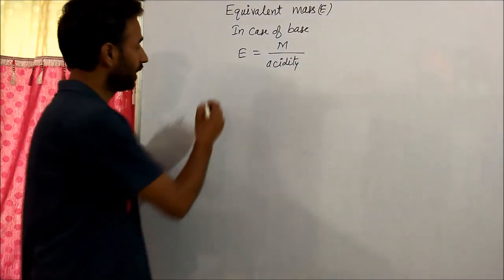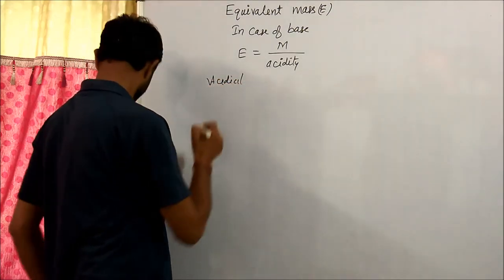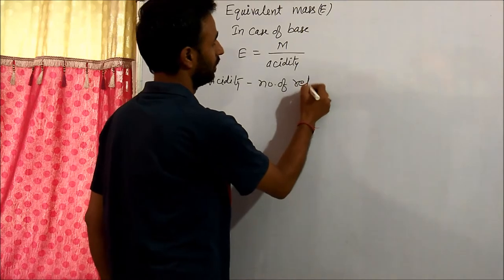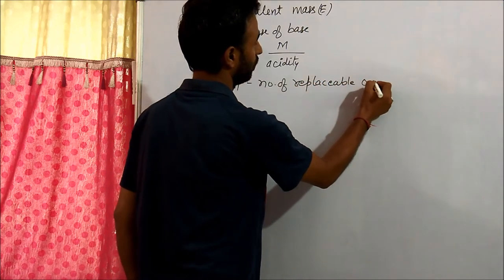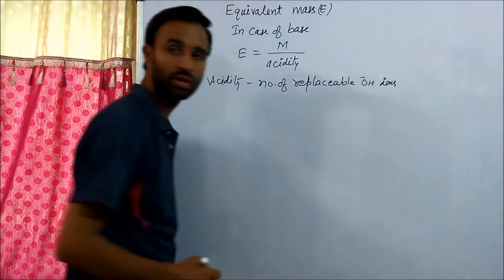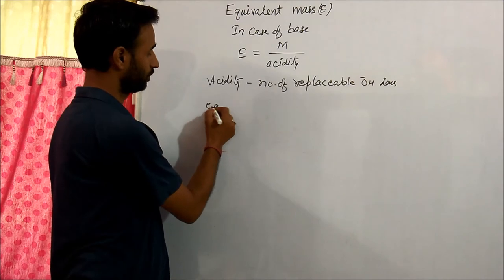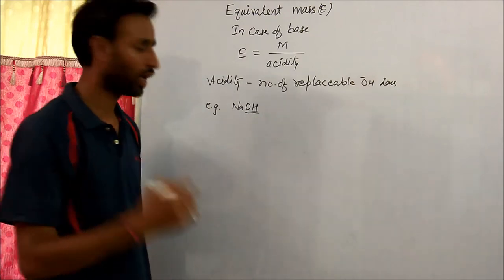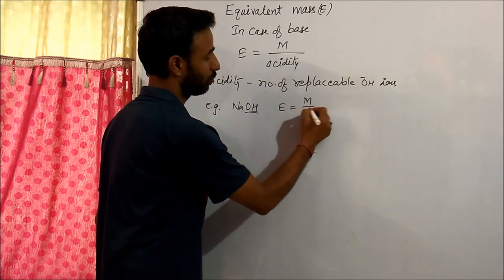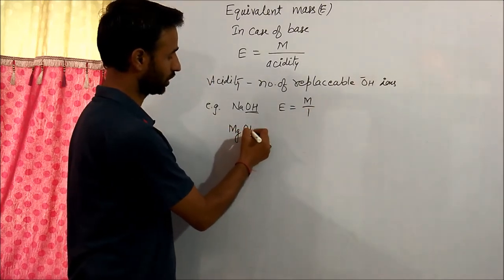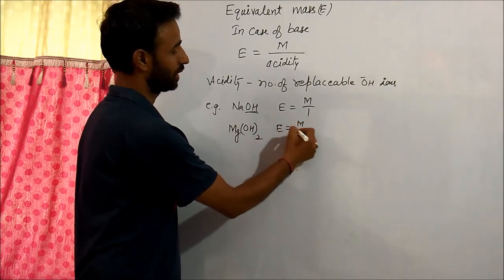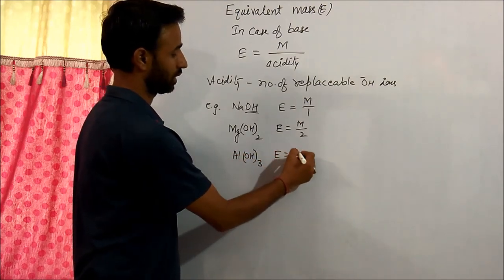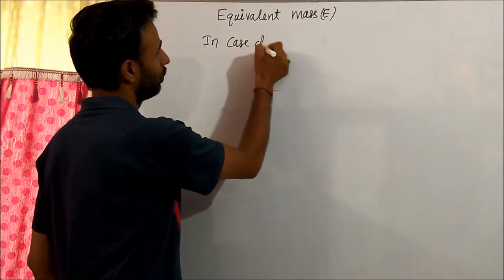In case of bases, equivalent mass equals molar mass divided by acidity. Acidity is the number of replaceable OH⁻ ions. For NaOH, acidity is 1, so equivalent mass is M by 1. For Mg(OH)₂, equivalent mass is M by 2. For Al(OH)₃, equivalent mass is M by 3.